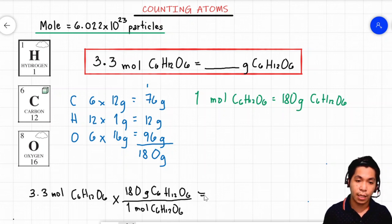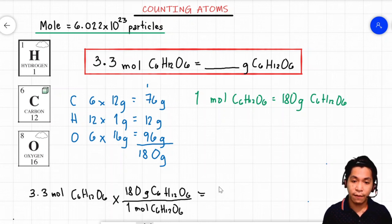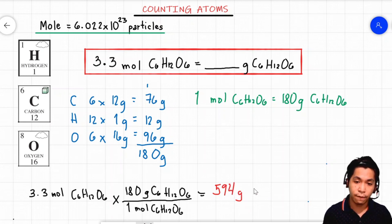3.3 multiplied by 180 divided by 1 gives you 594 grams of C6H12O6.